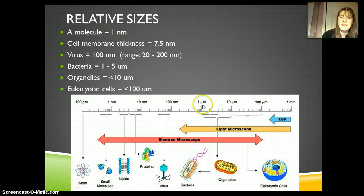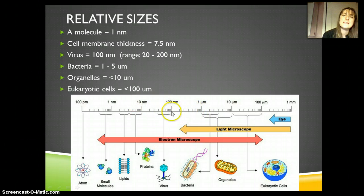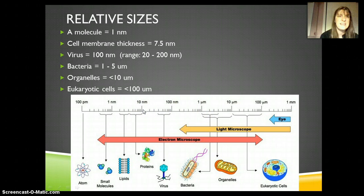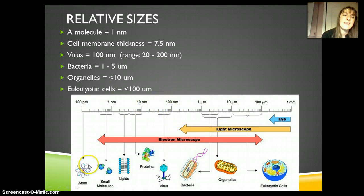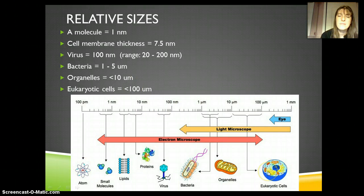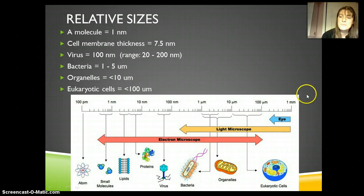Notice in this image these are actually on a log scale. That means the distance between each one of these is powers of 10 — so it's not a linear scale, it's a log scale. The atom is way, way, way smaller than the eukaryotic cell; if I put it on a regular linear scale, I couldn't fit them all in this image.